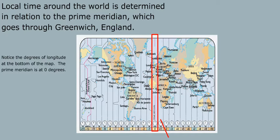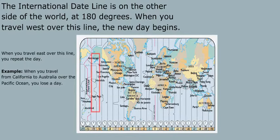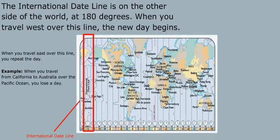Local time around the world is determined in relation to the prime meridian, which goes through Greenwich, England. Notice the degrees of longitude at the bottom of the map. The prime meridian is at zero degrees. The international dateline is on the other side of the world at 180 degrees.